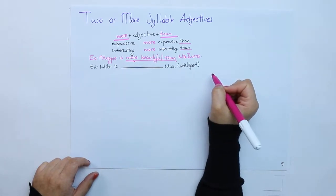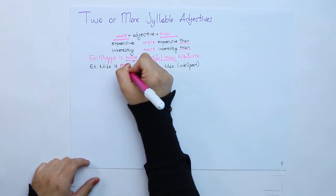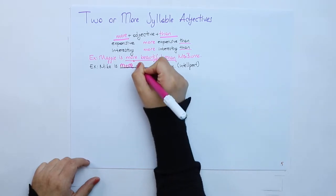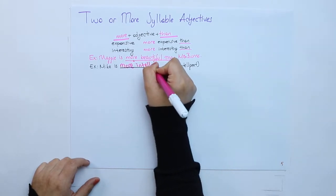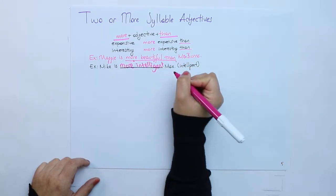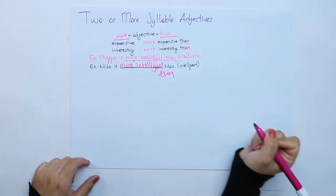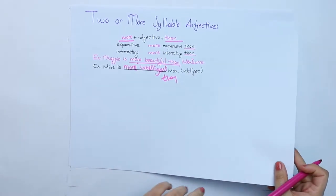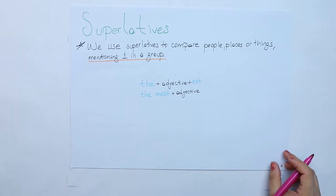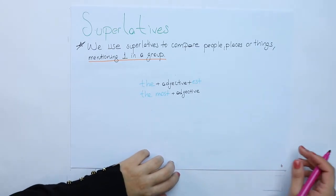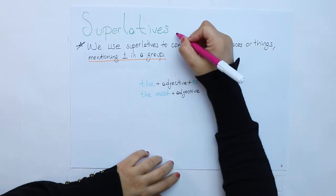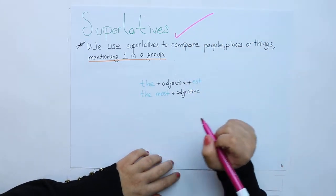Mike is more intelligent than Max. Those were the ones that we talked about comparative forms. Now it is time to talk about the forms of superlatives for the adjectives.